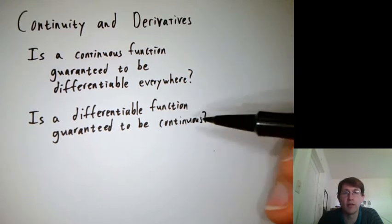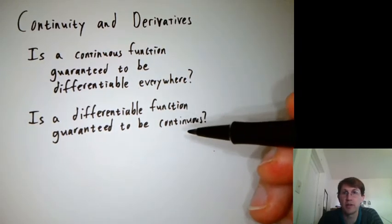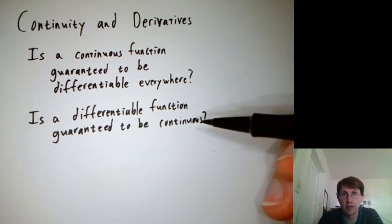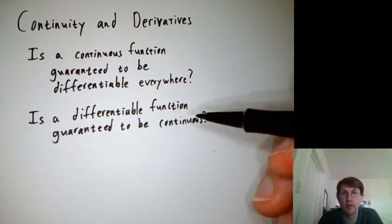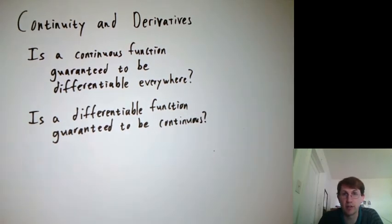And let's think backwards. If you know a function is differentiable, does that guarantee that it's continuous? Can it have a derivative everywhere but have a discontinuity somewhere?